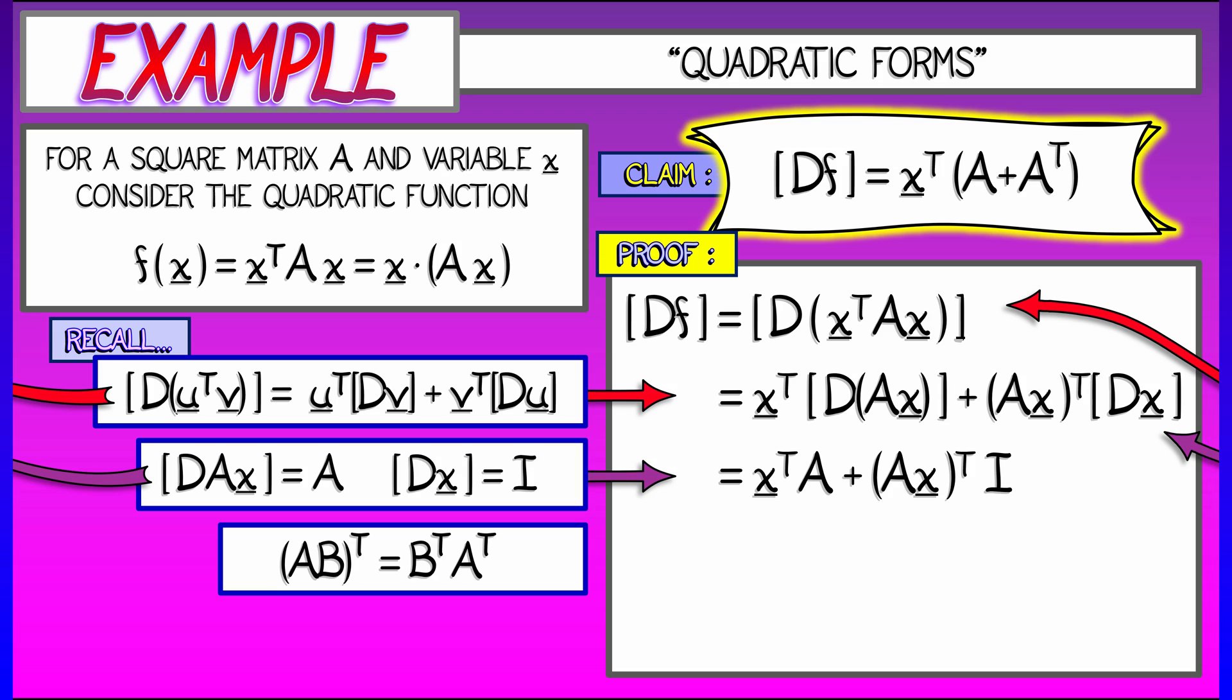To take care of that A x transpose, we're going to use the fact that the transpose of a product is the product of transposes in reverse order, remembering that from volume one. And now, substituting that in to that A x transpose, we get a final answer of x transpose A plus x transpose times A transpose. Factoring out the x transpose on the left gives us our answer.